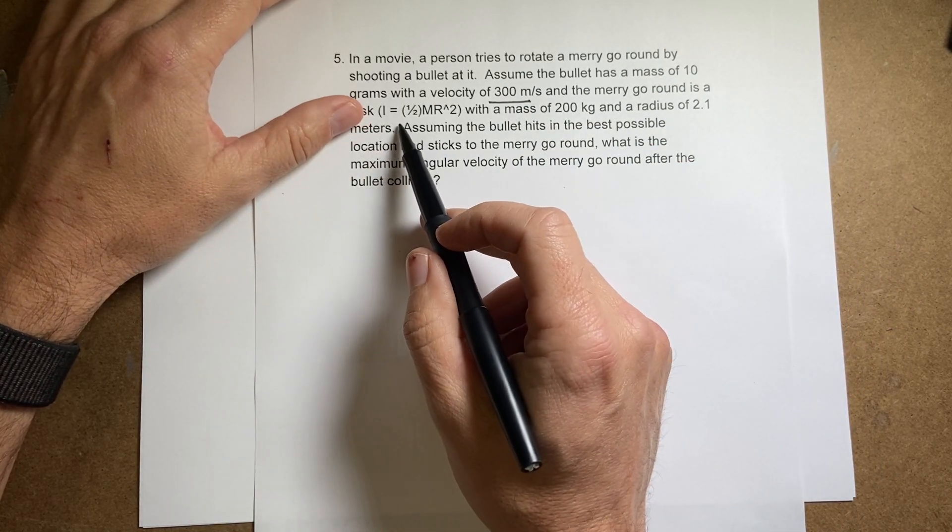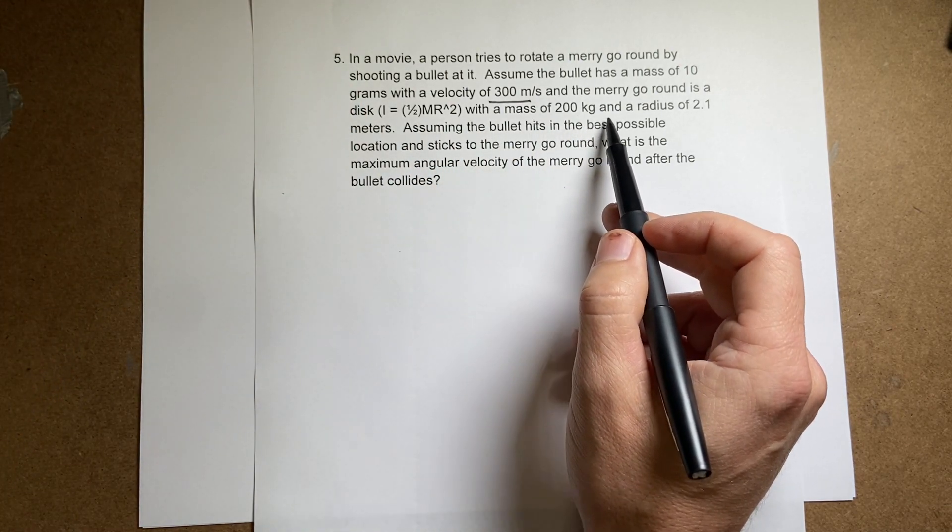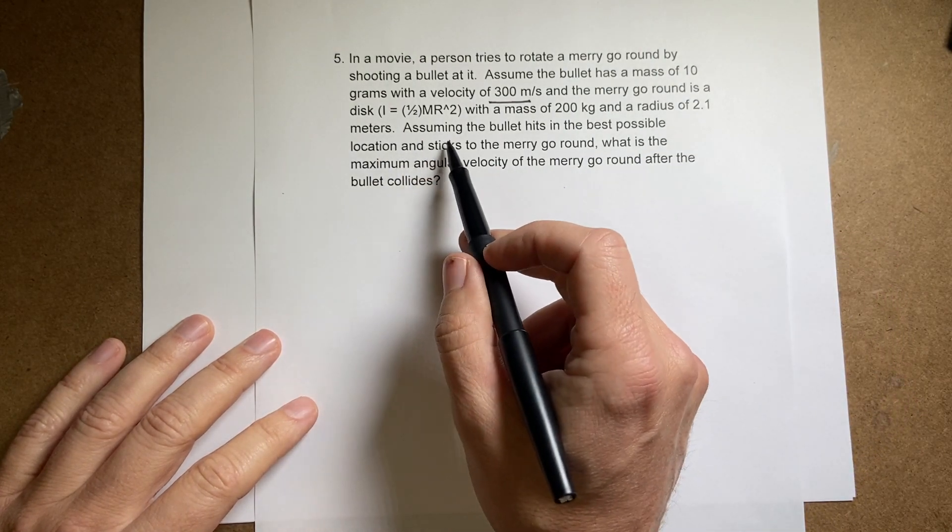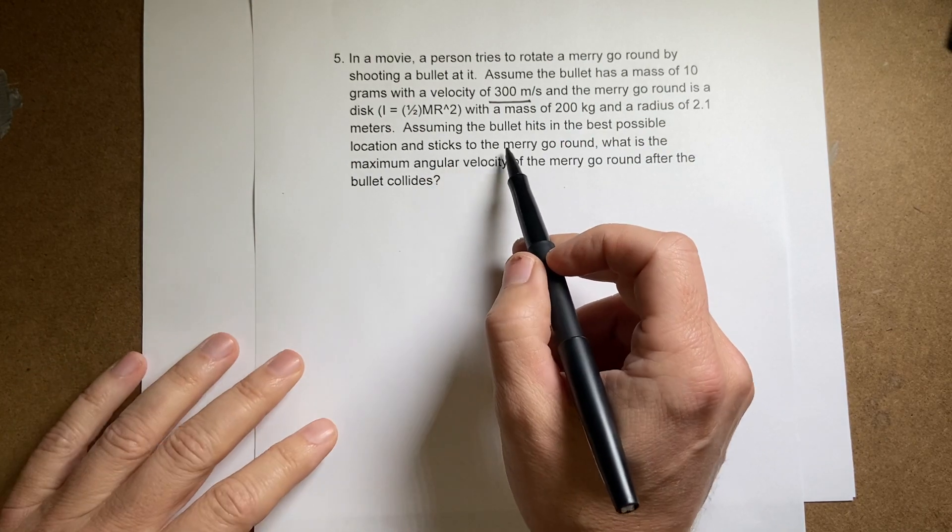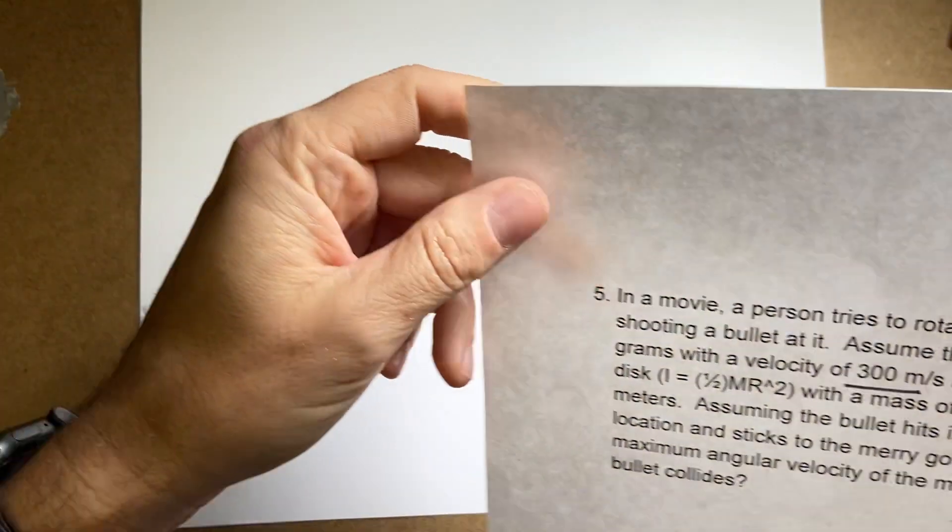The merry-go-round is a disk, and the moment of inertia is one half MR squared with a mass of 200 kilograms and a radius of 2.1 meters. I don't know why I did 2.1. Assuming the bullet hits in the best possible location and sticks to the merry-go-round, what is the maximum angular velocity of the merry-go-round after the bullet collides?